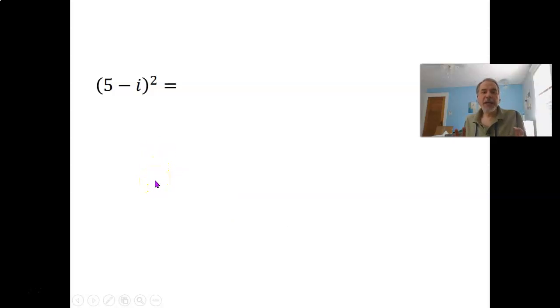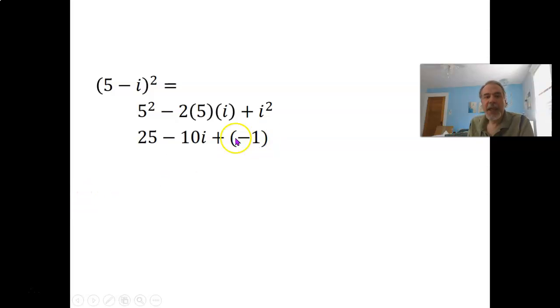What about 5 minus i squared? Remember, we can't just distribute the exponents. Powers do not distribute over addition or subtraction. Instead, this means 5 minus i times itself, 5 minus i times 5 minus i. And what happens when you multiply out a binomial, something minus something else, you get the first thing squared minus 2 times the first thing times the second thing plus the second thing squared. So here that would be 5 squared, which is 25, minus 2 times 5 times i, so minus 10i, plus i squared, which is negative 1. And now we can simplify this further because the 25 and the negative 1 add up to 24. So 5 minus i squared turns out to be 24 minus 10i.